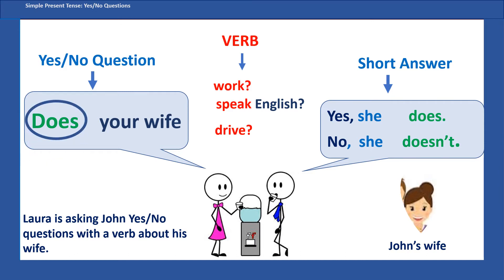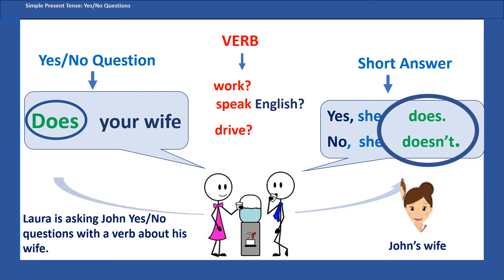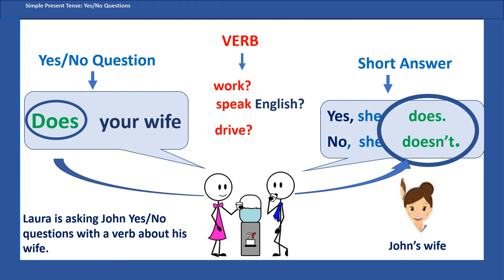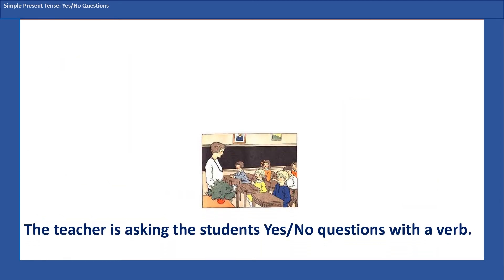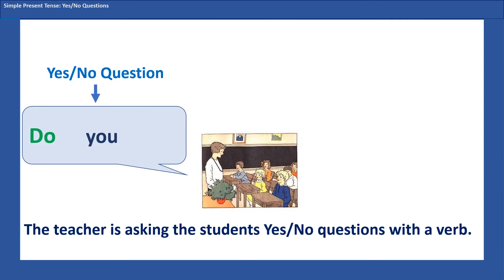So in the yes/no question the helping verb 'does' is used because it helps the verbs 'work,' 'speak,' and 'drive.' We see 'does' in the question and 'doesn't' in the answer. The teacher is asking the students yes/no questions with a verb, and because there's a verb, you need the helping verb 'do.'